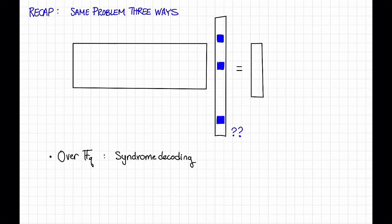Over the complex numbers of the reals, this is called sparse recovery or compressed sensing, and it's useful for a variety of applications in signal processing.